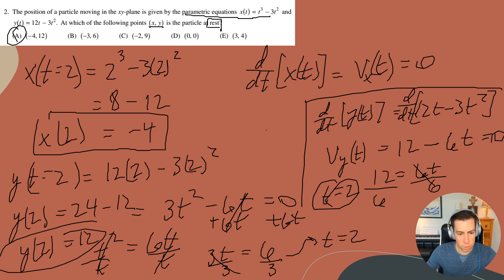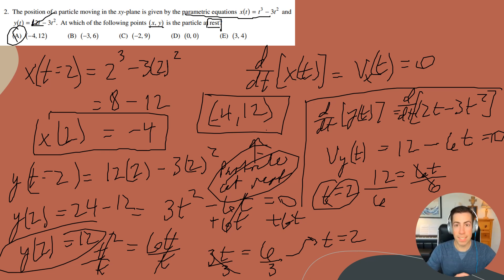So our x and y coordinate is going to be negative 4 and 12, just like that. And at this point, the particle is at rest. So that means that A was the correct answer. We checked our work and that is it. If you have any questions, feel free to comment below and I'll see you for the third question.